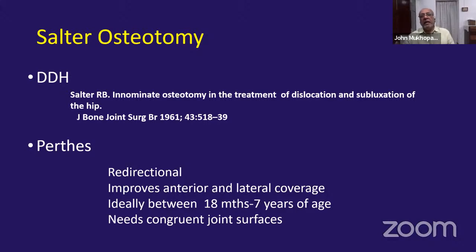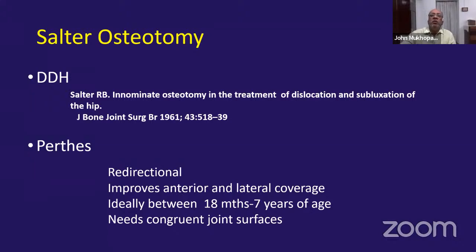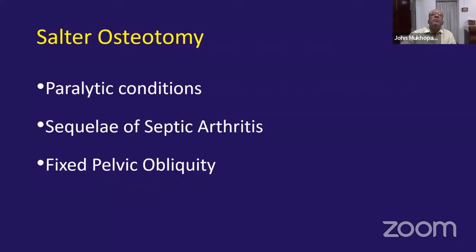The Salter osteotomy provides anterior and lateral coverage. It is ideally performed between 18 months and 7 years of age, as you need to hinge on the pubic symphysis and the symphysis pubis and triradiate cartilage should still be open. A key prerequisite is that the hip should have congruent joint surfaces — if you have a misshapen hip, this is not ideal. Other pathologies include paralytic hip dislocations, cerebral palsy where coverage is needed after reduction, sequelae of septic arthritis, and certain conditions with fixed pelvic obliquity.